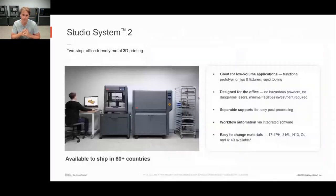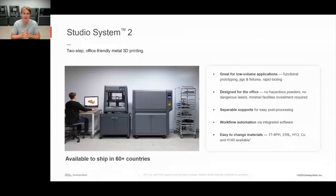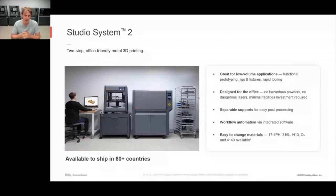Quick recap: Studio System 2 is great for office-friendly metal 3D printing and low-volume applications — prototyping, jigs and fixtures, tooling. It's designed for the office environment with no hazardous powders, no dangerous lasers, and very minimal facility investment. It has easy-to-use support structures, automated workflow, and easy-to-change materials that come in cartridges, similar to an inkjet printer.